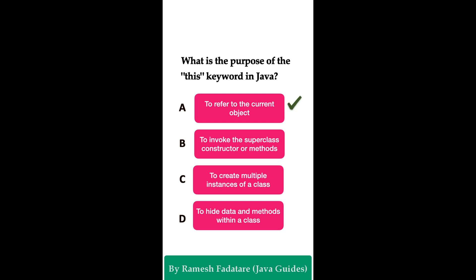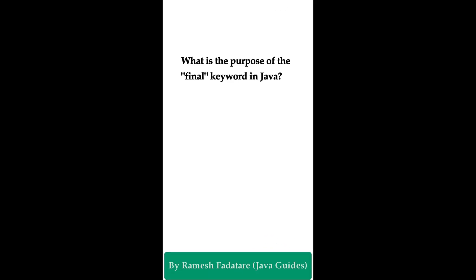The correct answer is option A: to refer to the current object. The this keyword in Java is used to refer to the current object within an instance method or a constructor. It is often used to distinguish between instance variables and method parameters.